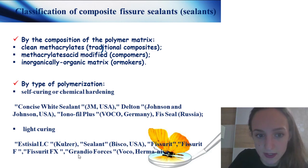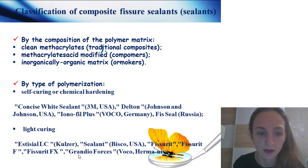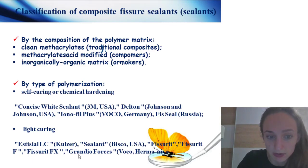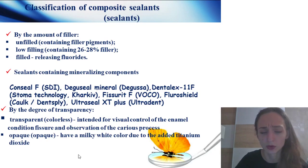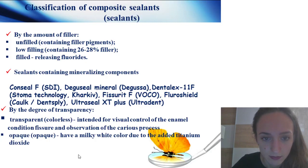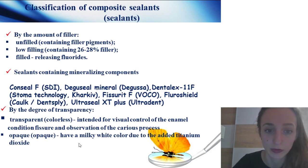By composition of the polymer matrix: pure methacrylates, then methacrylates with modified inorganic-organic matrix. By type of polymerization: self-curing or chemical hardening and light-curing. Self-curing example: Concise White Sealant. Light-curing example: Fissurit. By amount of filler: unfilled, low-filled, and filled.